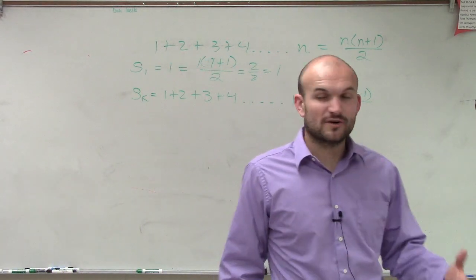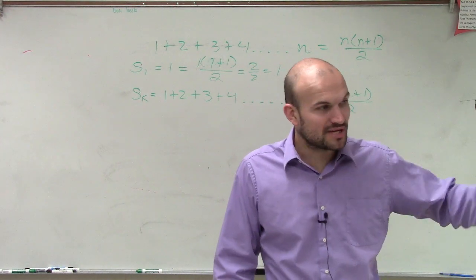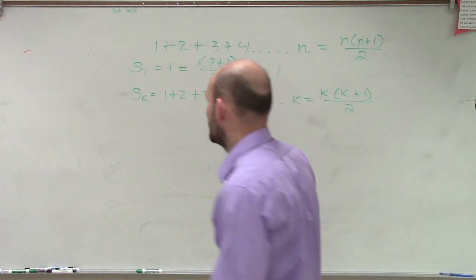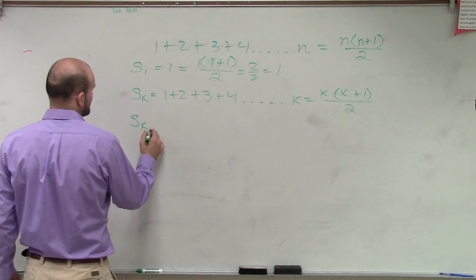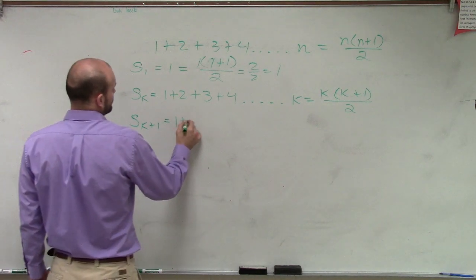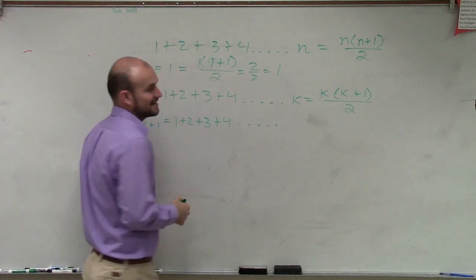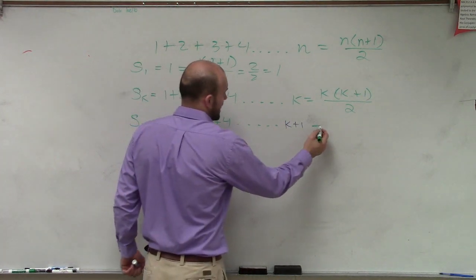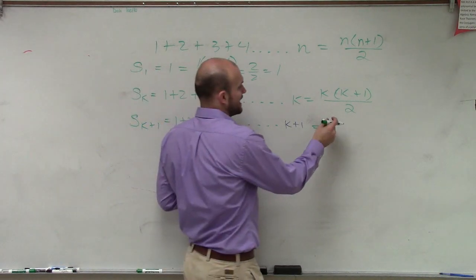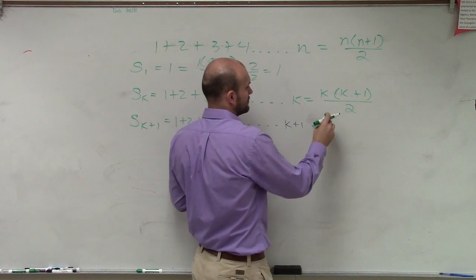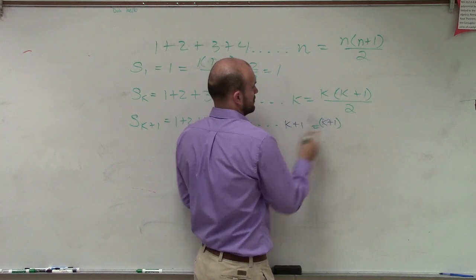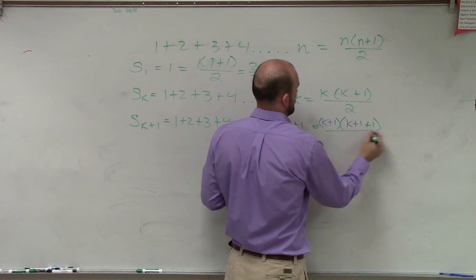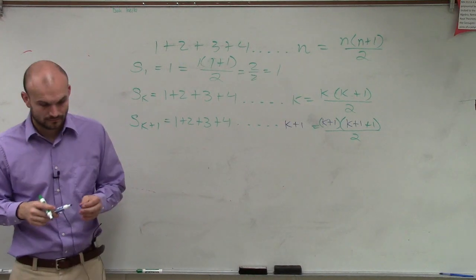So now we're going to say, all right, if it's true for k, and our next term plus 1, is that going to be equal to s of k plus 1? So we'll do, let's figure out what s of k is going to be. Sorry, s of k plus 1. 1 plus 2 plus 3 plus 4 dot dot dot. The next term in the sequence is going to be k plus 1. That now has to equal our, again, I'm going to plug in k plus 1.